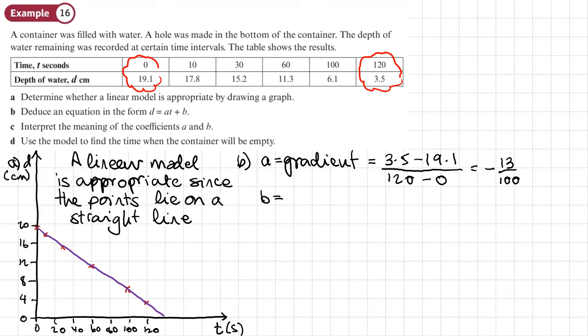B is going to be the intercept where the line crosses the D axis. And we can read that off here. The intercept there is 19.1. So just write 19.1. So we can write the equation of the line as D equals negative 13 over 100 T plus 19.1.